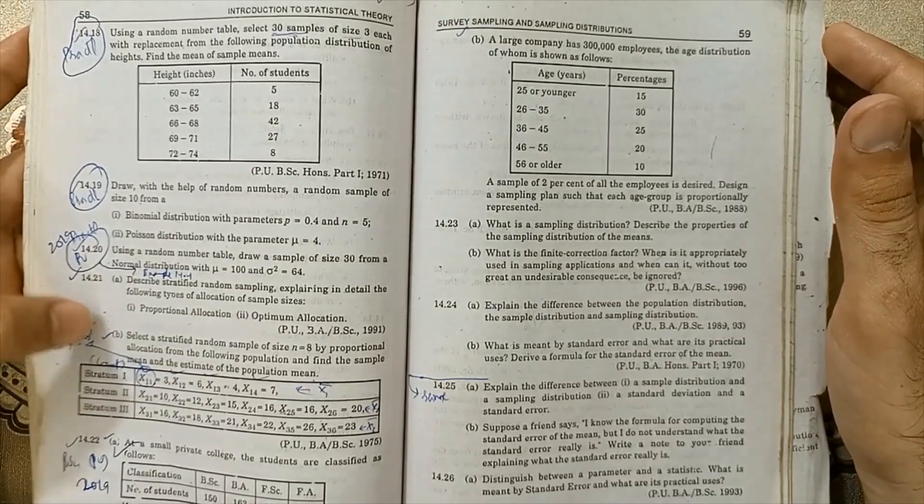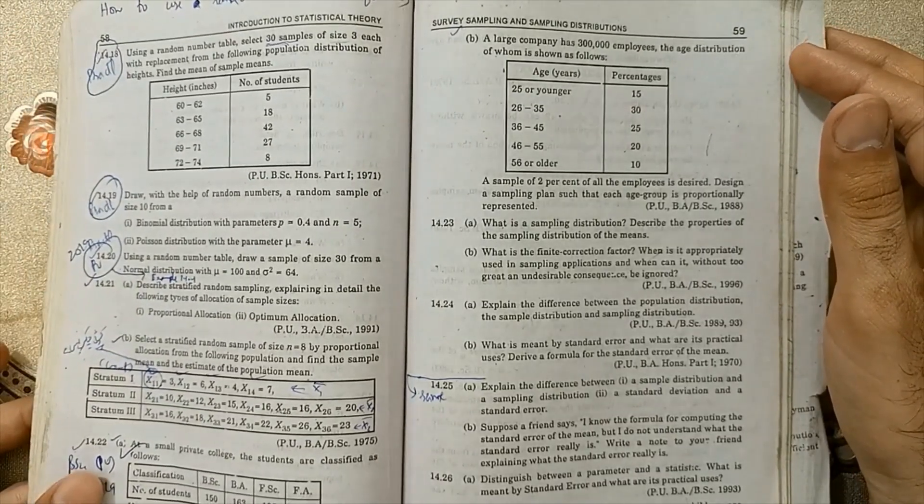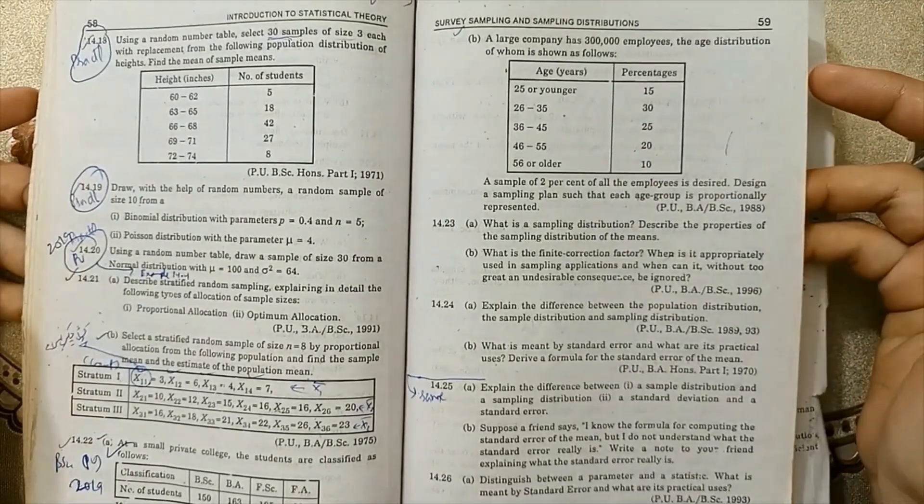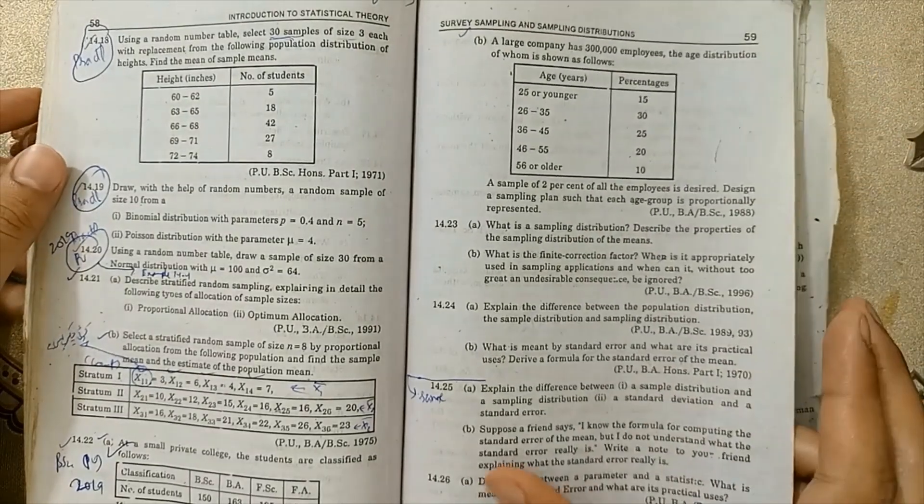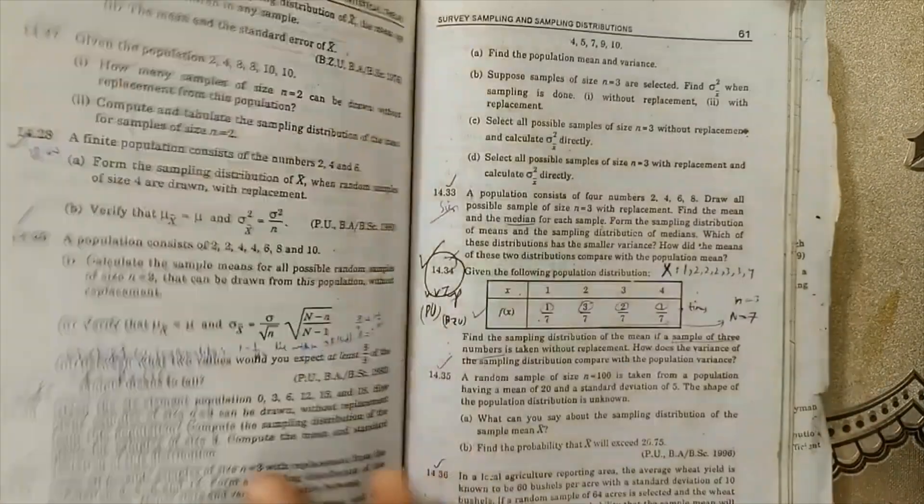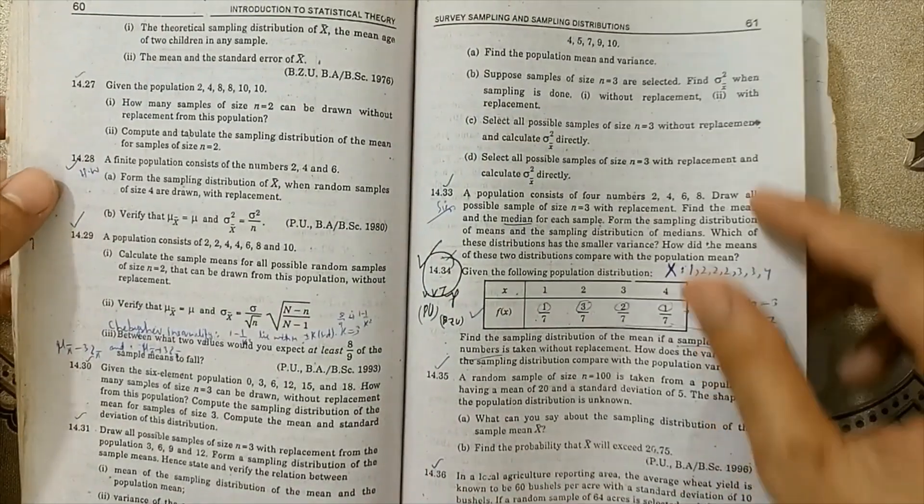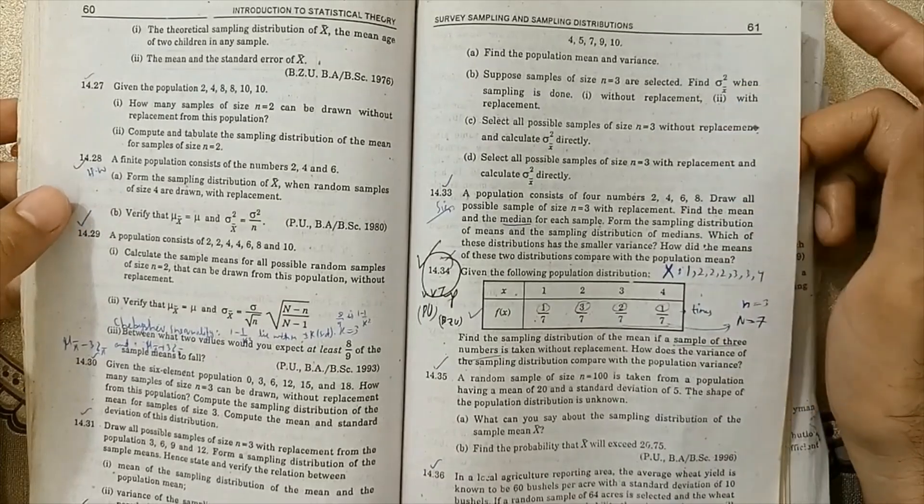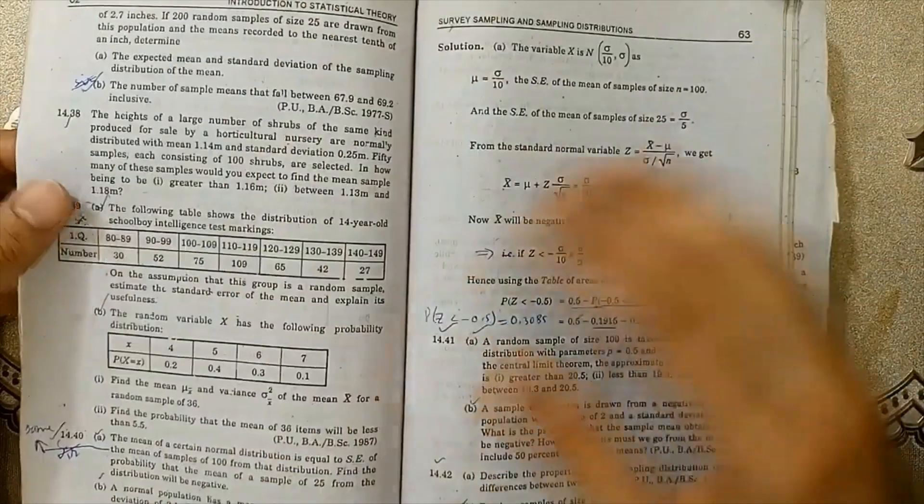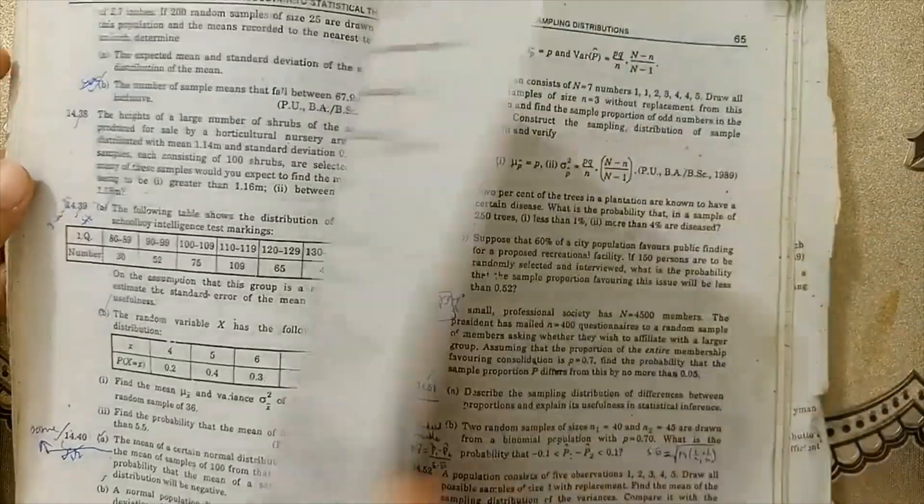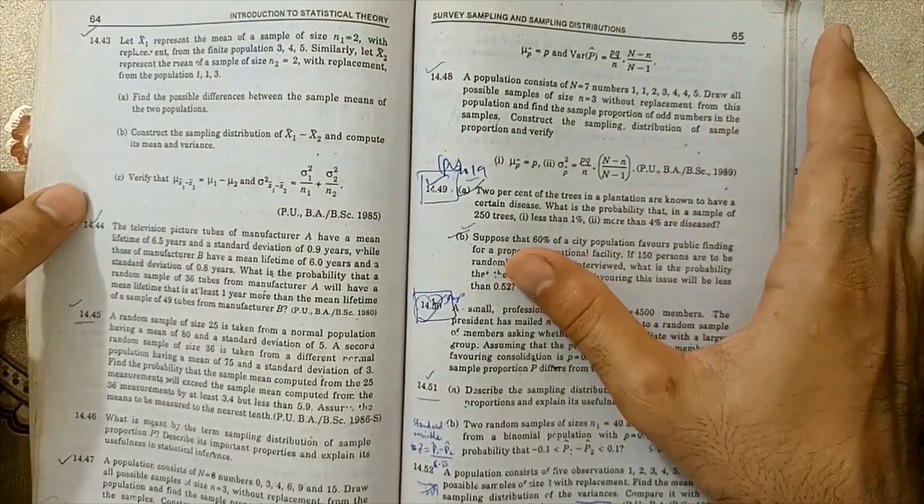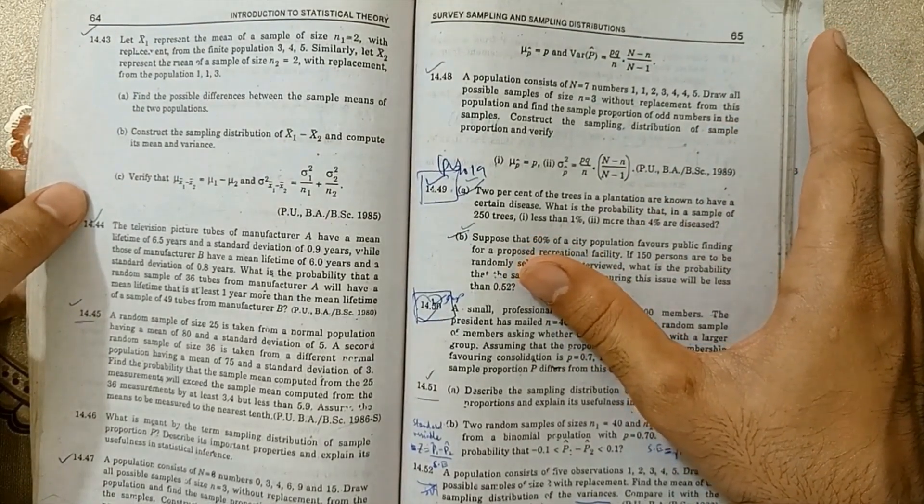14.21 part b is very important for exams. 14.22 parts a and b are very important for BSc Statistics Part 2 exams of 2022. 14.25 part b and 14.26 part b are very important. You can try 14.28 and 14.29. Next, 14.34 is very important for BSc exams. Finally, 14.49 on page 65, parts a and b, are very important for BSc Statistics Part 2 exam.